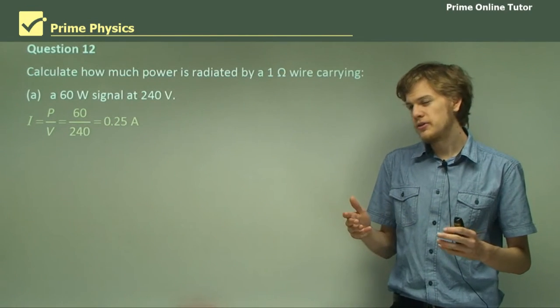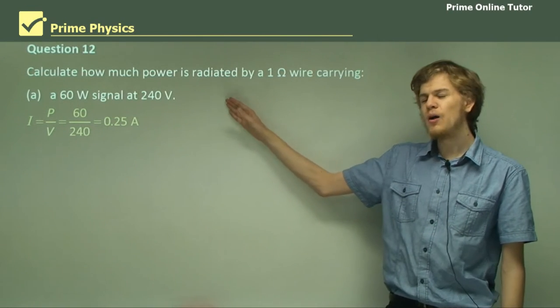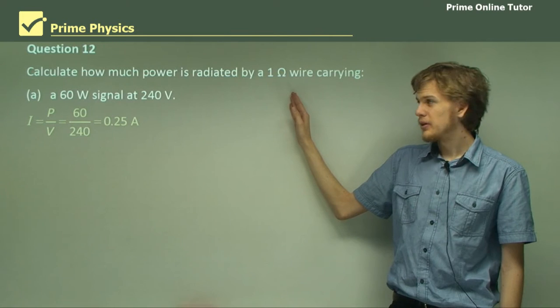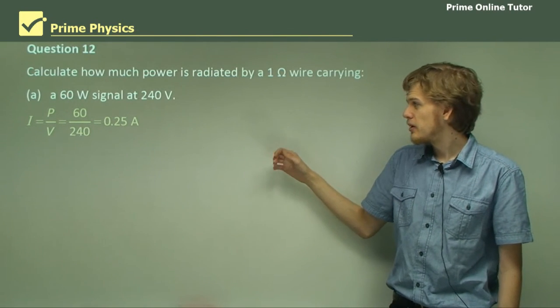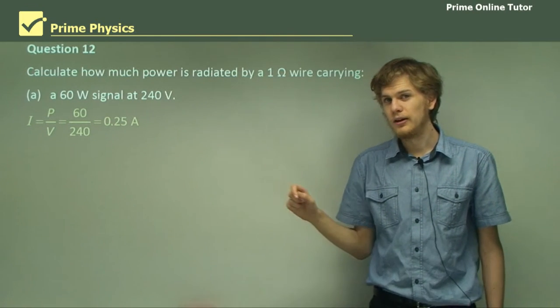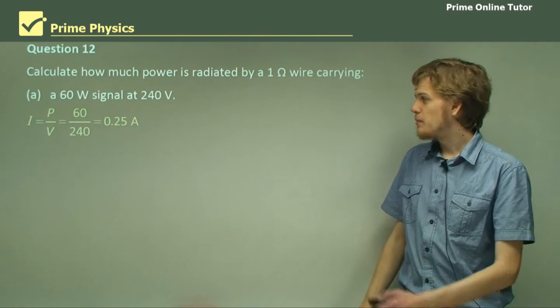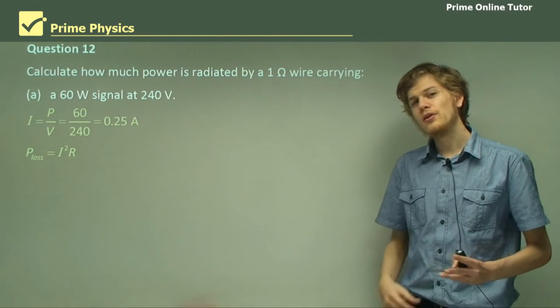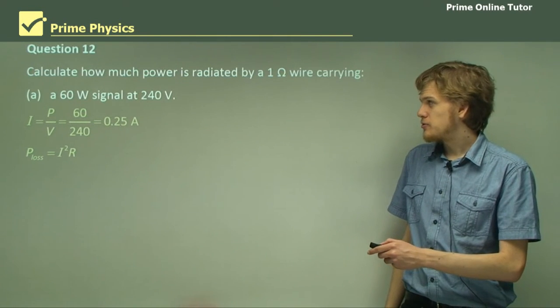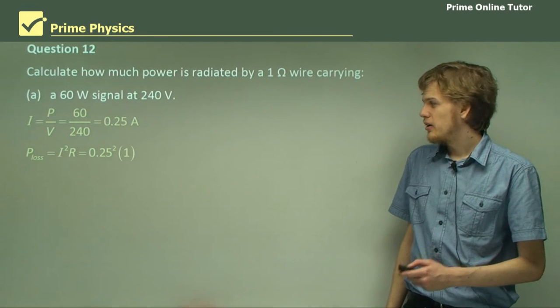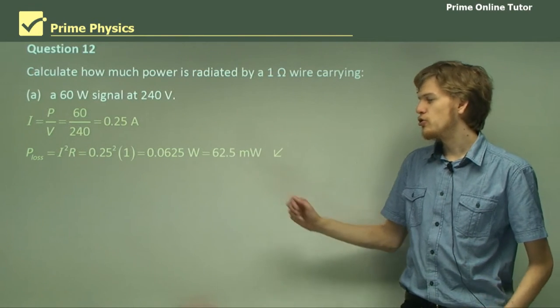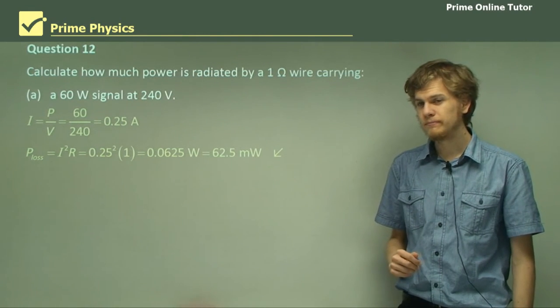Now this doesn't quite answer the question. The question is asked how much power is radiated. So we don't know the voltage drop across the 1 ohm wire. It's certainly less than 240 volts. But we do know that 0.25 amps flow through it, and we do know its resistance. And that means that we can use this equation in order to figure out how much power it radiates away. So, substituting I and R, we end up with an answer of 0.0625 watts, or 62.5 milliwatts. Very small amount.